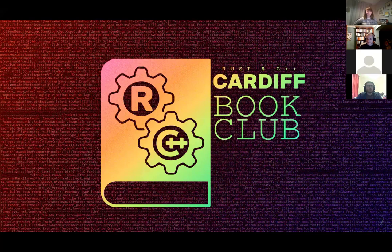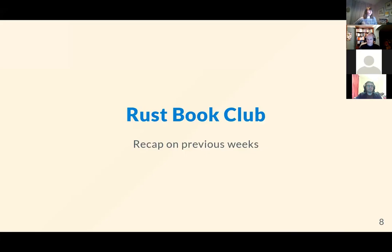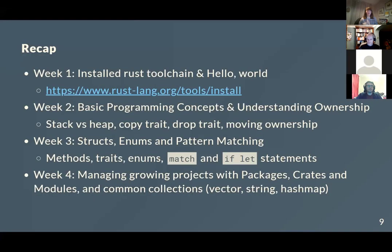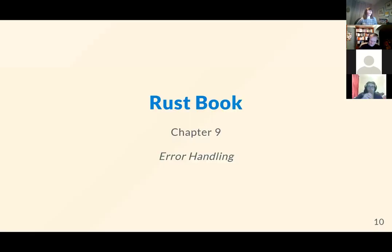This is week five of our book club, taking us on to chapters nine and ten. Brief recap on what we've covered so far: installation, hello world, getting up to speed with cargo. We started covering basic programming concepts and ownership, structs, enums, and pattern matching, then packages and crates to grow your project. This week we're getting into error handling in chapter nine, and chapter ten covers generics, traits, and lifetimes. Without further ado, I'll hand over to Richard.